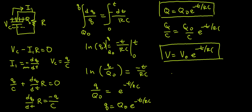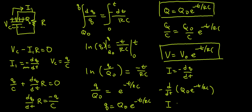Finally, we're going to solve for the current. We know that I is equal to negative dQ/dt. So we're going to take the negative derivative of Q of t, which is Q naught e to the negative t over RC. And we get I equals Q naught over RC times e to the negative t over RC.